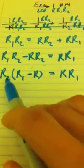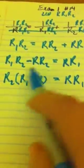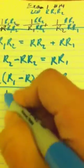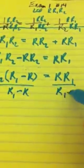One last step to solve for R2, just divide by this mess here. So if I divide both sides by R1 minus R, R1 minus R.